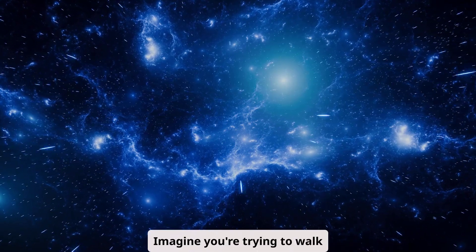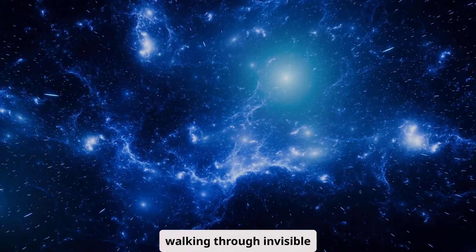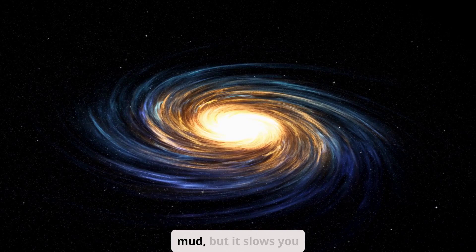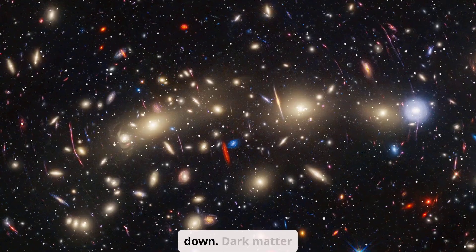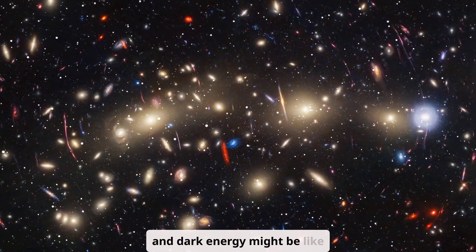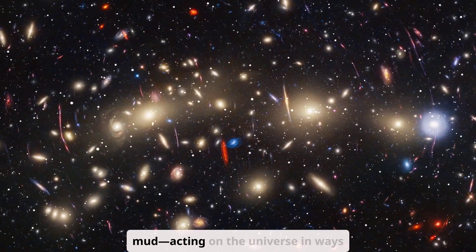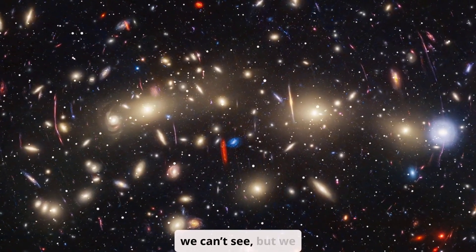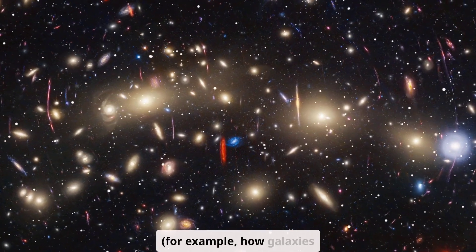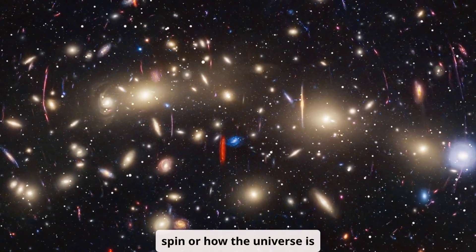Imagine you're trying to walk down the street, but feel like you're walking through invisible mud. You can't see the mud, but it slows you down. Dark matter and dark energy might be like that invisible mud, acting on the universe in ways we can't see, but we can measure its effects, for example, how galaxies spin or how the universe is expanding.